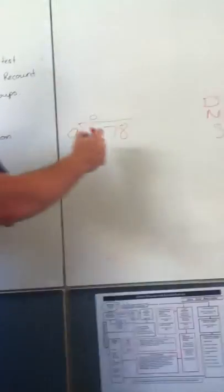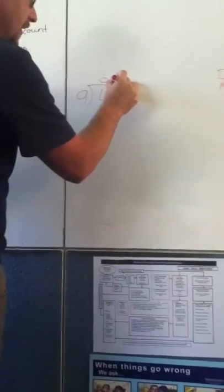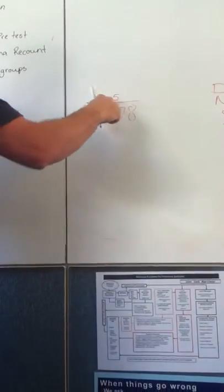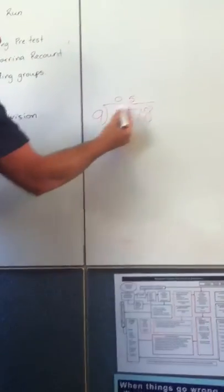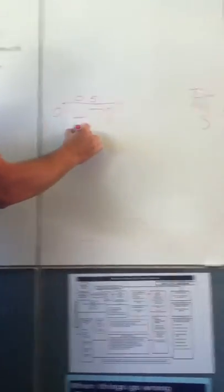5. 5? Okay, let's see. 5 times 9, so I've done the divide, now we're doing multiply. 5 times 9 is 45.